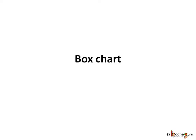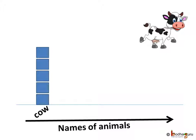In this video we shall learn about a type of chart called a box chart. Mungerilal has many cows, goats, hens, and ducks. We can easily show how many animals of each kind he has through a box chart.